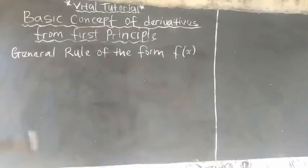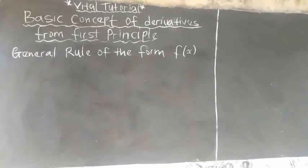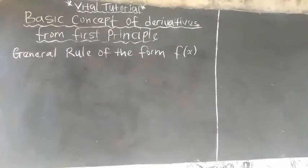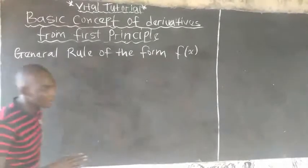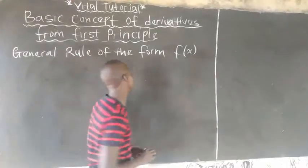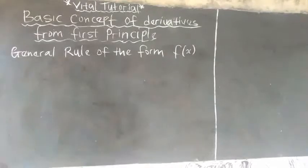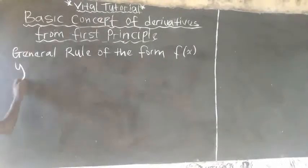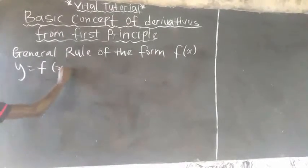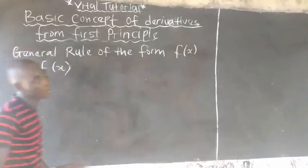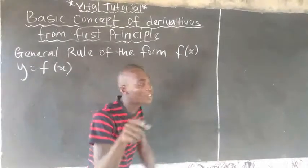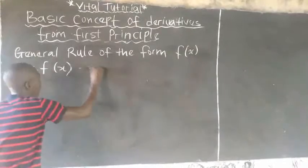So I will start with the general rule of the form f(s). I will give you some steps and I want you to follow me as I continue. So here, we assume that y is equal to f(s). The first step here is that you make the original equation, your equation number 1.